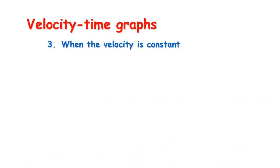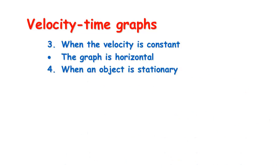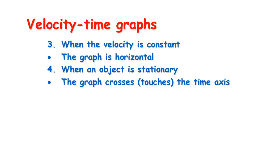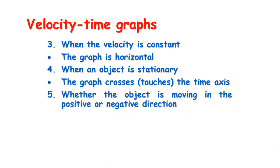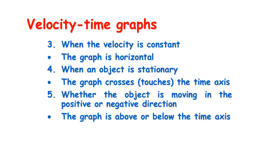We can work out when it's travelling with constant velocity — unlike the displacement-time graph where horizontal meant stationary, here a horizontal section means it's moving at the same velocity the entire time. The object is stationary when the graph touches the time axis, because the vertical axis is now velocity — when velocity is zero, the object is not moving. We can also tell direction: when the graph is above the time axis the velocity is positive, so it's moving in the positive direction; when it's below the axis the velocity is negative.